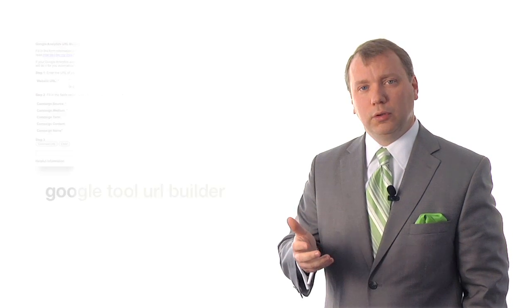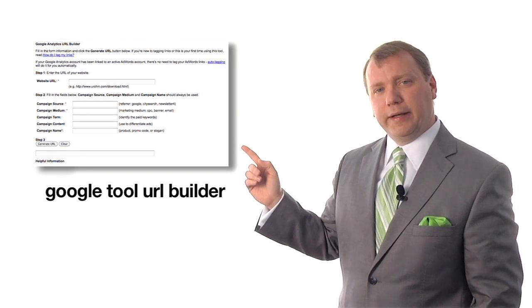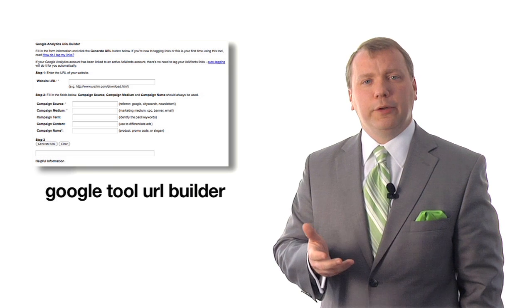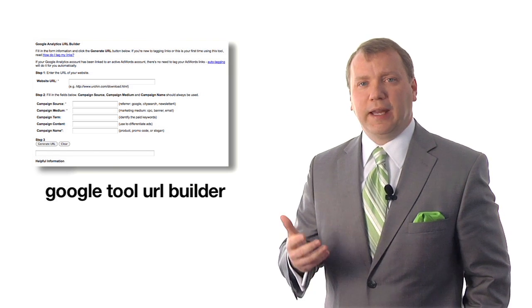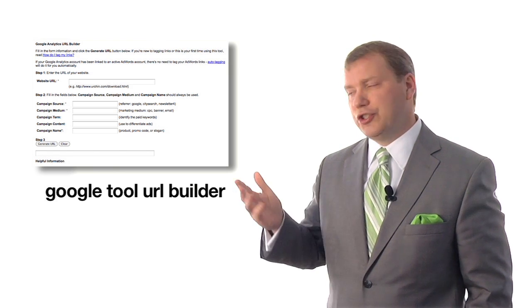What you've got to do is get a Google account, and once you have the Google account, I want you to search for Google tool URL builder. And this is what it looks like right here. So you would put in all your information, the campaign term, the campaign information, your keywords, and then generate a URL.